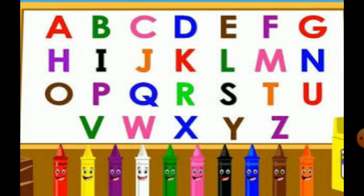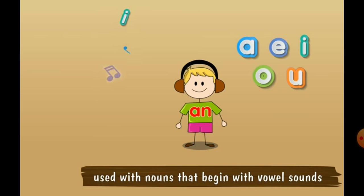We all know that there are 26 letters in the English alphabet. Out of these, the 5 letters — A, E, I, O and U — are called vowels. When a word starts with a vowel, or more specifically with the vowel sound, we use AN before such words. For example: